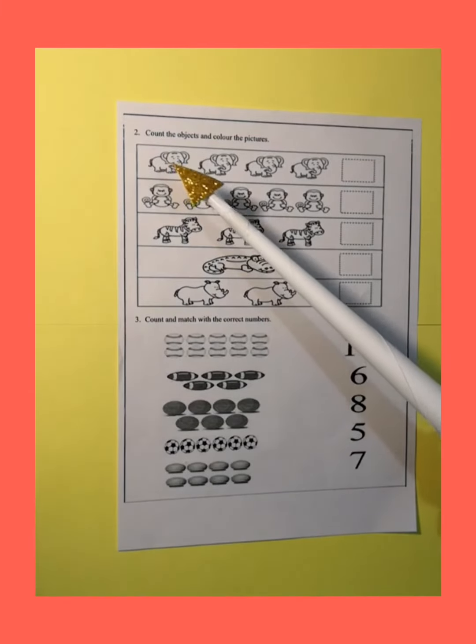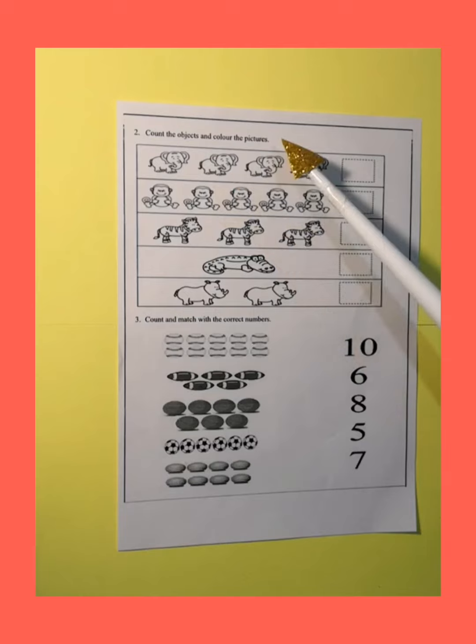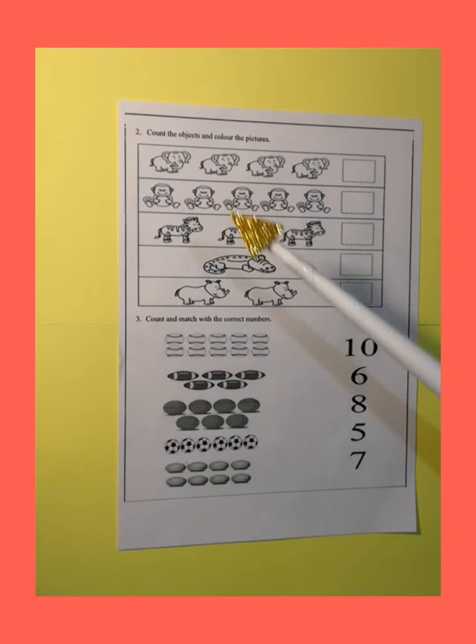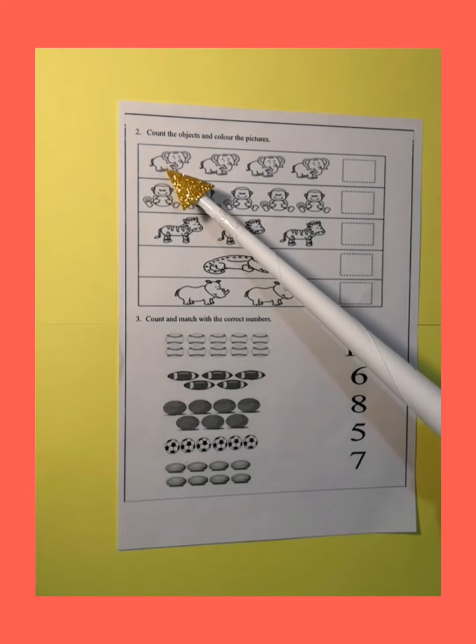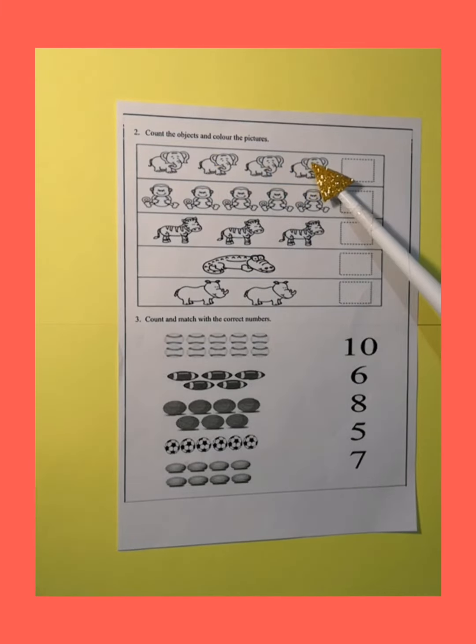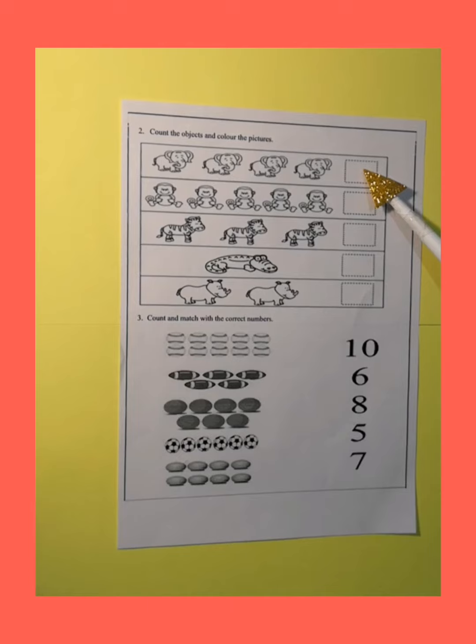Now, let's go to the question number 2. Count the object and color the picture. First, we will count the object and write the number in the box. So, let's count with me. 1, 2, 3, 4. So, write 4 here in front of it.